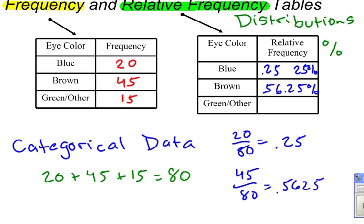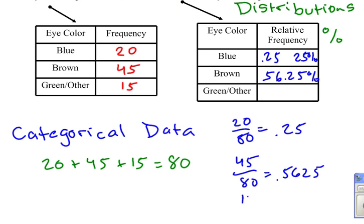And finally, we've got green or other, and for our green eyes we had 15 out of 80. And 15 out of 80 gives us 0.1875, which is 18.75%.